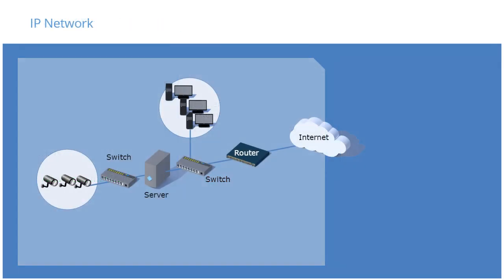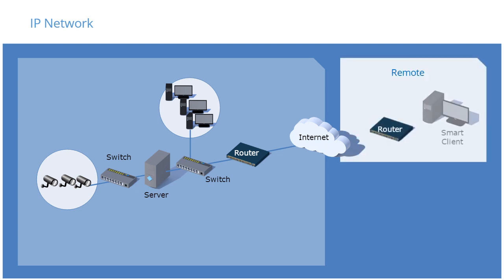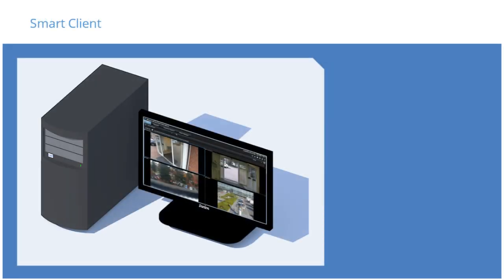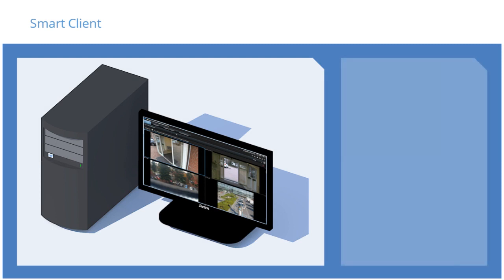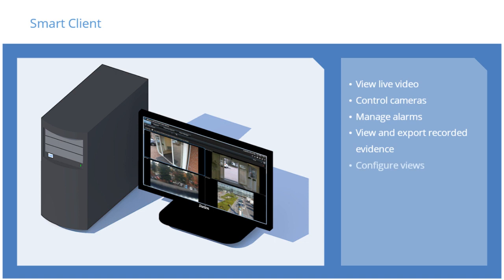With a system configuration like this, a remote Smart Client can connect directly to the server through a VPN. Here's a Windows PC running XProtect Smart Client. The Smart Client workstation is used by operators to access and view live video and audio, control cameras, manage alarms, view and export recorded evidence, and configure views.